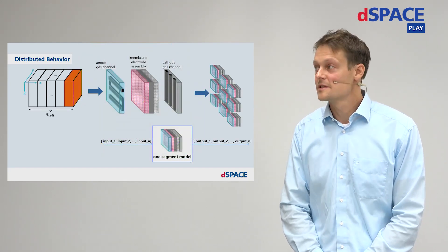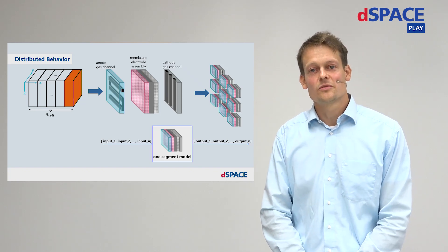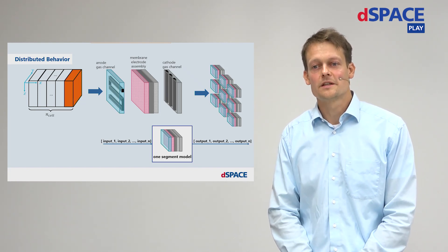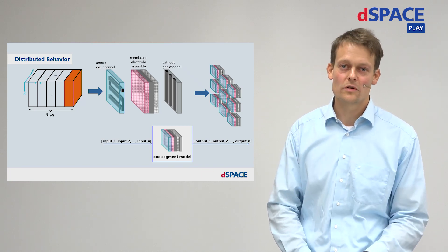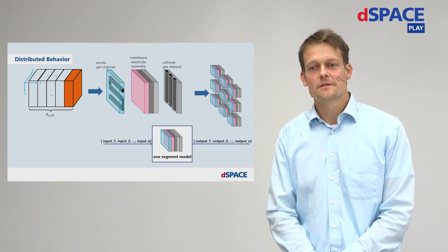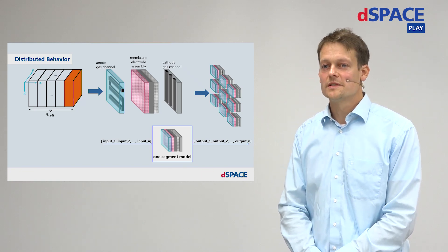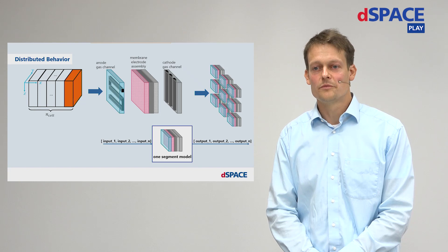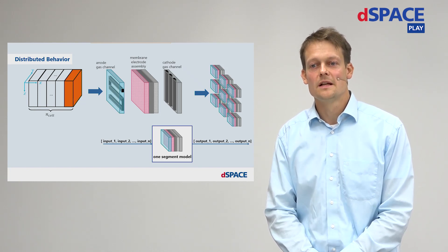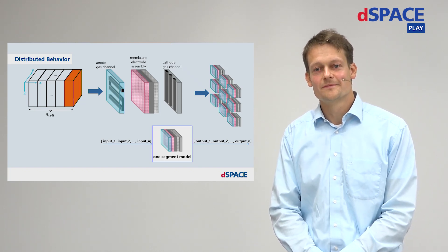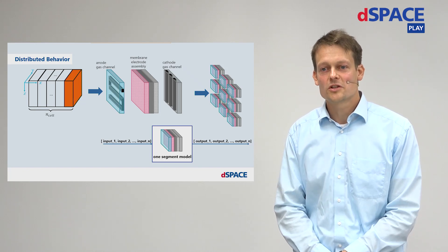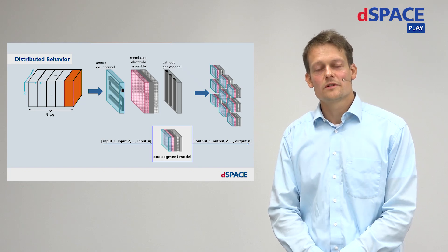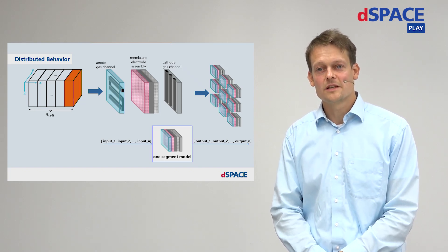Looking at the gas flow channels in the fuel cell application, one will directly identify the need for adaptability in flow architectures, as you will find co-flow, counter-flow fields, or meander-type channels. By separating the fuel cell into distinct segments, the non-uniform distribution of pressure, temperature, and spatial current densities in the cell are taken into account. Utilizing construction matrices to describe the flow direction leads to a solution which can easily be parameterized to the customer application.